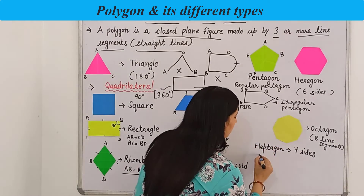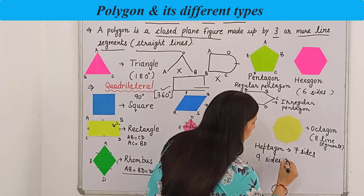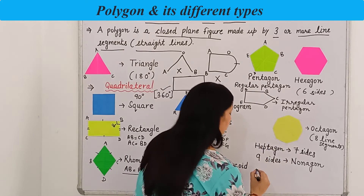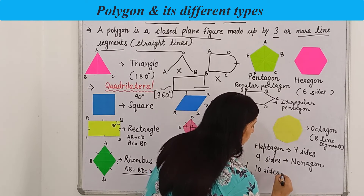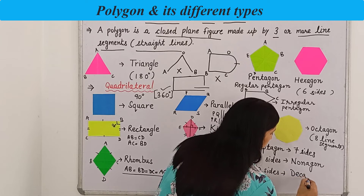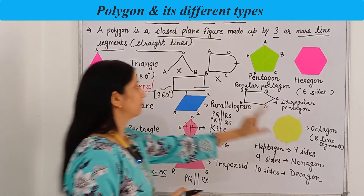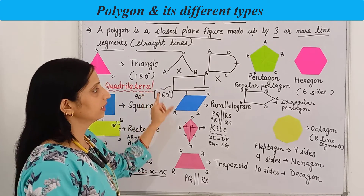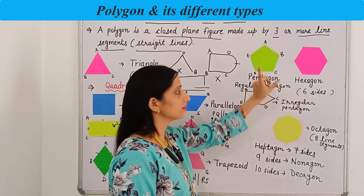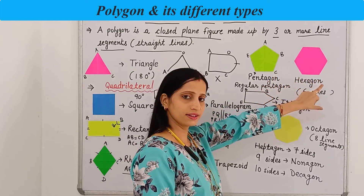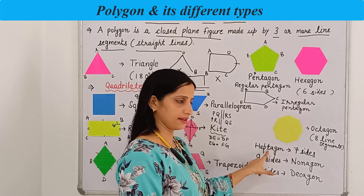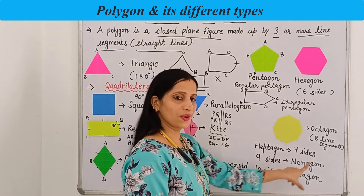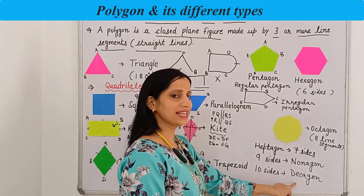A polygon with nine sides is known as a nonagon, and a polygon with ten sides is known as a decagon. To recap: three sides — triangle; four sides — quadrilateral; five sides — pentagon; six sides — hexagon; seven sides — heptagon; eight sides — octagon; nine sides — nonagon; ten sides — decagon.